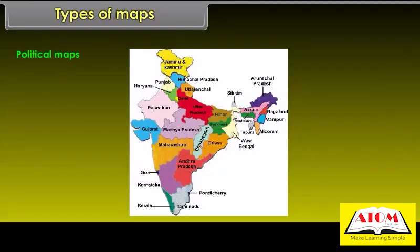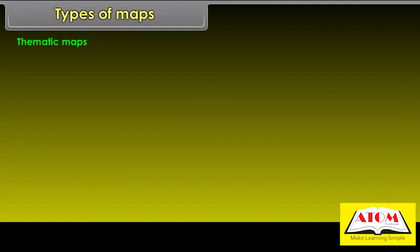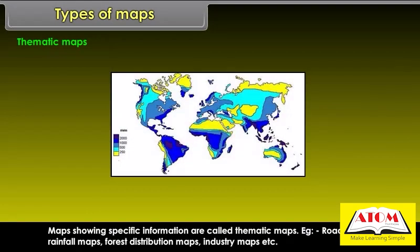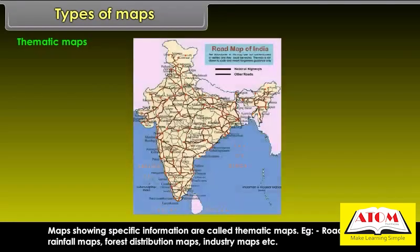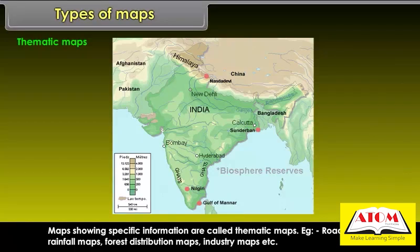Political Maps show different countries and states of the world with their boundaries. Example: Political Map of India. Maps showing specific information are called thematic maps. Examples include Road Maps, Rainfall Maps, Forest Distribution Maps, and Industry Maps.